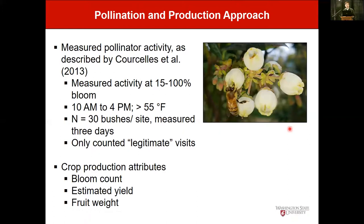As Lisa mentioned, cold weather and precipitation reduce pollinator activity, so we only evaluated visitation rates during optimal pollination conditions — when it wasn't raining, wind speeds were relatively low, between 10 a.m. and 3 or 4 p.m., and temperatures were above 55°F, ideally above 65°F. In addition to visitation, we also looked at crop production attributes: bloom number across sites to standardize comparisons, and then estimated yield and fruit weight.